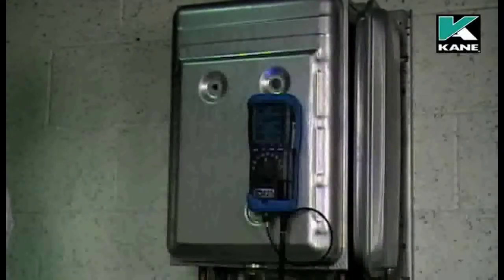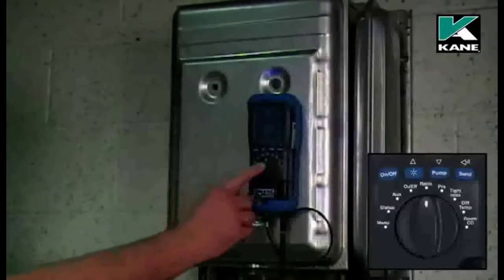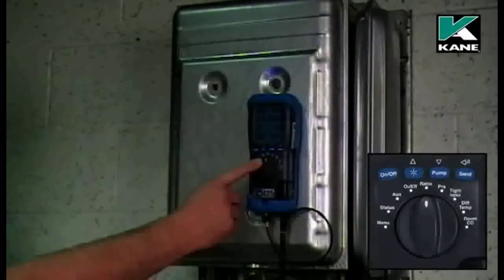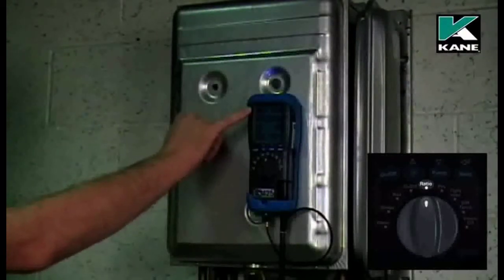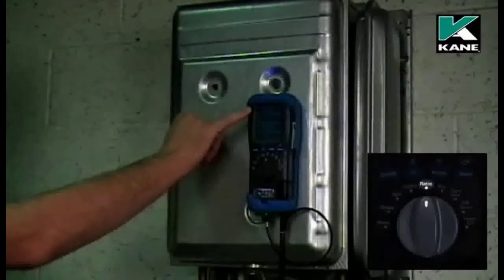When the fresh air purge is complete, move the dial to where it says ratio and check that the fuel is the correct fuel. You can select the fuel via the menu.